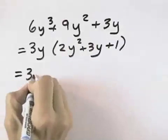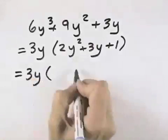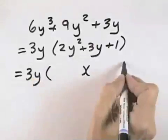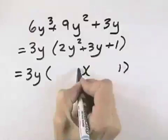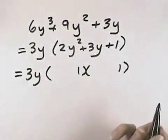So we know that our first factors are 3 and y. Then we can see we have 3 terms, so we break up our parentheses to try to factor this trinomial. The last term is a 1, so the product has to be 1 times 1.